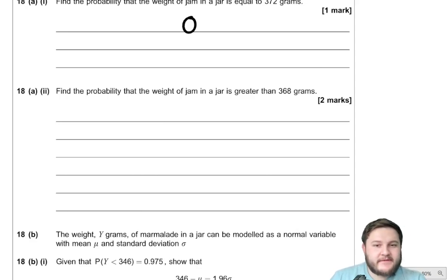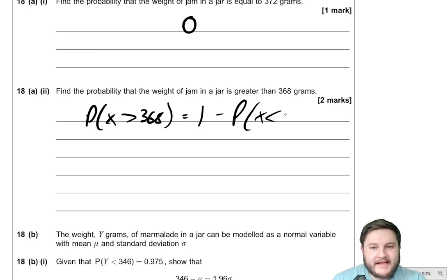Whereas the second part says, find the probability that the weight of the jam in the jar is greater than 368 grams. Well, to work this out, the probability that X is greater than 368, I would do 1 minus the probability that X is less than 368. Now, we don't have to say less than or equal to because, remember, probability being equal to 368 is zero.